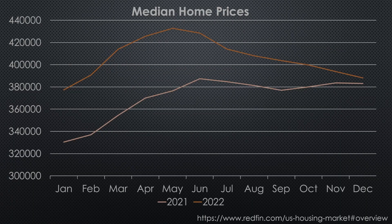This is a graph of the numbers I extrapolated from Redfin. The lighter line on the bottom is median home prices in 2021. The top line is from 2022. If you zero in on the home prices in December of each year, you will see that in December of 2022, the sales price was 1.3% higher than it was in December of 2021.